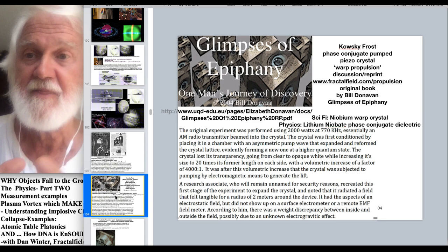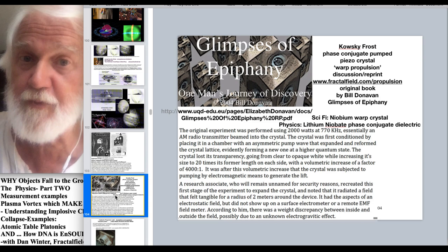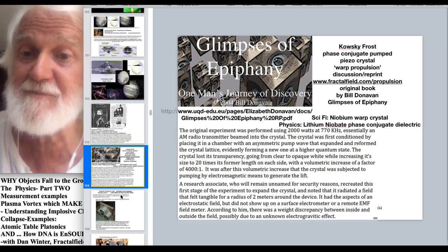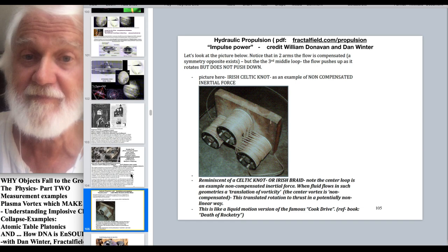But point being that the Z helical axis of the quartz is a rotating conjugator. So if you put a phase conjugate pump wave, in this case in the Kosky Frost crystal, this explains how it made 800 times its own weight in gravity. Actually, the physics of what was called warp propulsion versus what was called impulse propulsion.